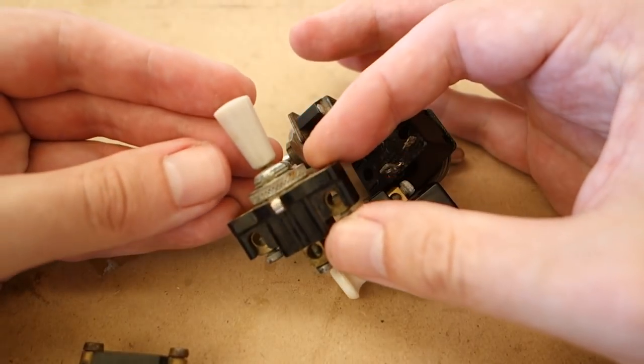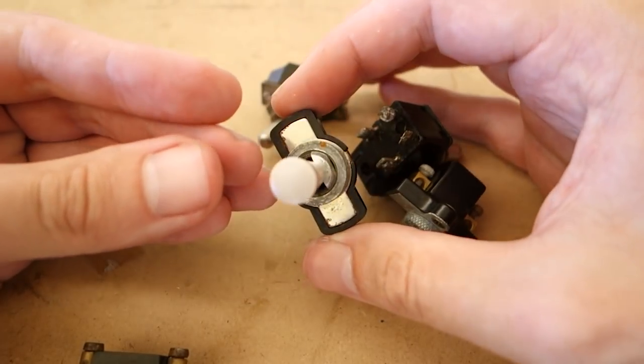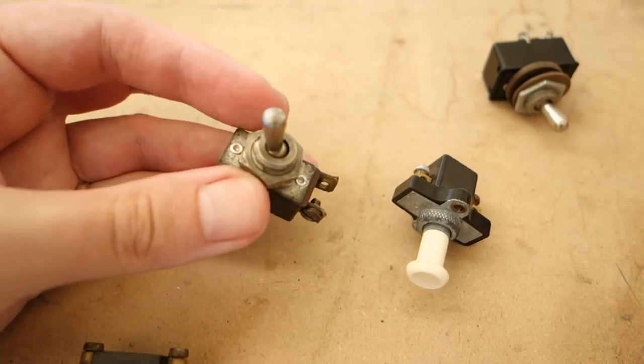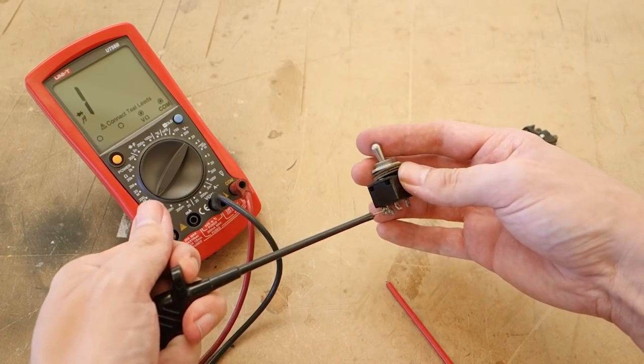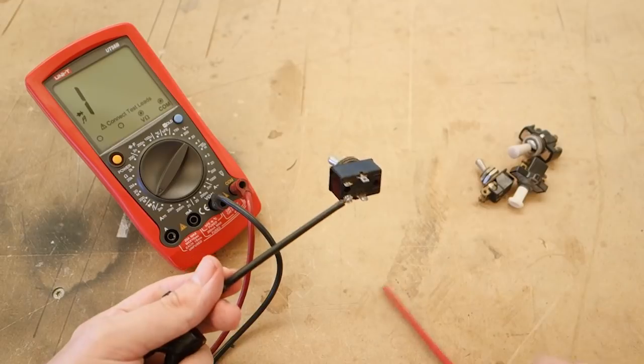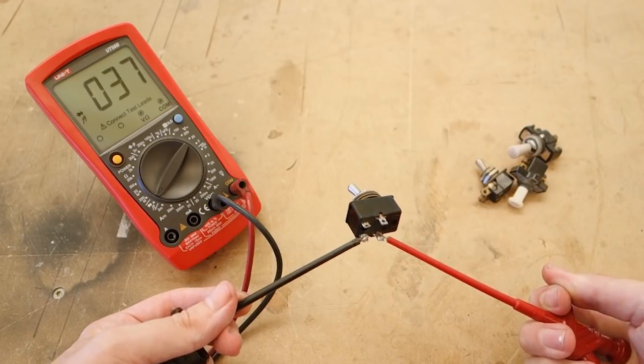First things first, how do we even know any of these switches are worth restoring? They could be completely dead and not switching at all. If you have a multimeter, you can simply hook up the leads in continuity mode to make sure that there is electrical connection through the switch.